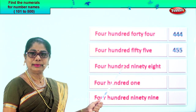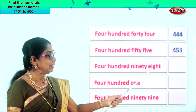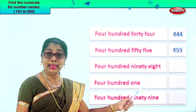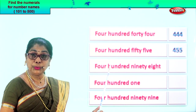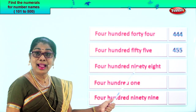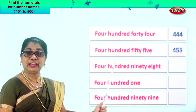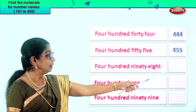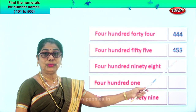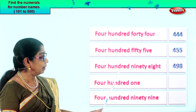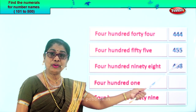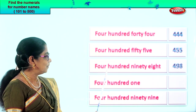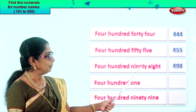Let's look at the next number name. Four hundred ninety-eight. Four in the hundreds place, nine in the tens place, eight in the ones place — four, nine, eight. So we write it as four hundred ninety-eight. How do you read this? Four hundred ninety-eight.